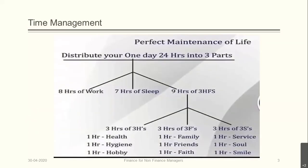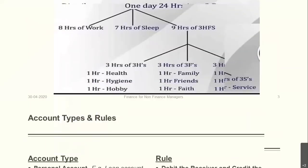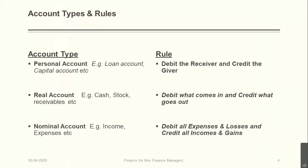Before we start, I want to share a thought on time management: 24 hours split between three parts — eight hours of work, seven hours of sleep, and nine hours of three H's and three F's. Three H: health, hygiene, and hobby. Three F: family, friends, and faith. Three S: service, soul, and smile. Now, getting to the subject — accounts.